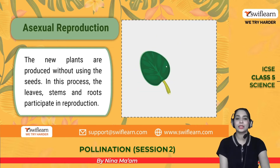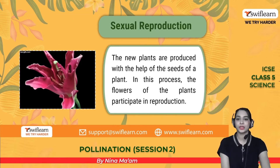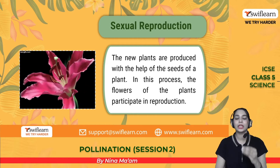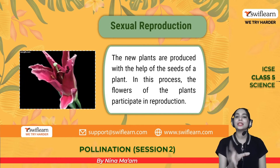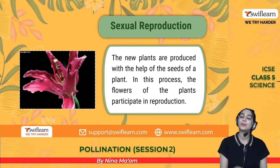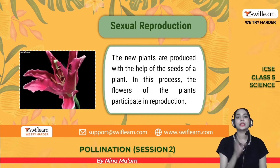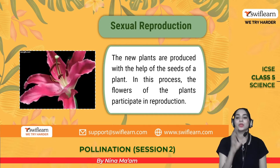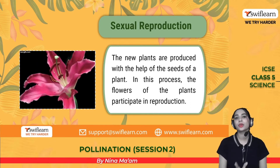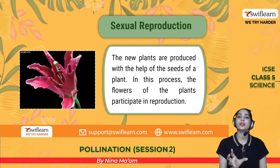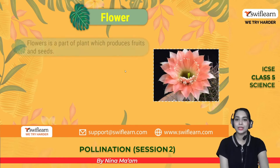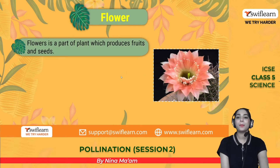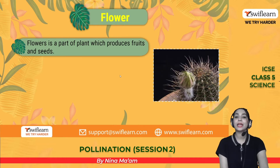In sexual reproduction, new plants are produced with the help of the seed. Seeds play a vital role in this reproduction, which is why it is known as sexual reproduction. Examples include orchids and many other kinds of flowers. The flower is a part of a plant which produces fruits and seeds.